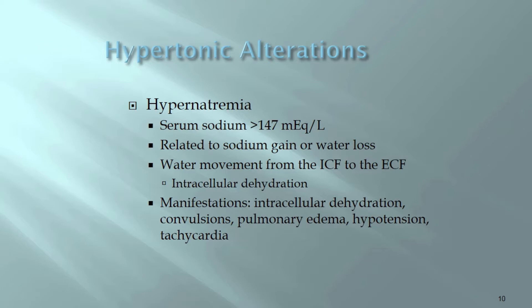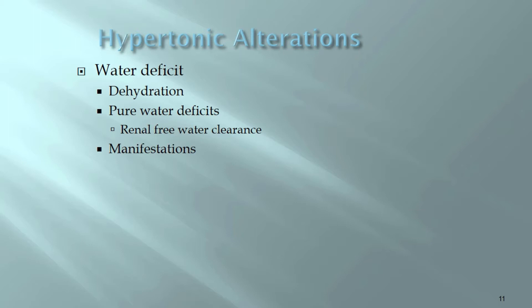Hypernatremia is a hypertonic alteration — higher concentration of sodium. Sodium concentration greater than 147 mEq/L is considered hypernatremia. Hypertonic alterations secondary to water deficits can manifest as dehydration.